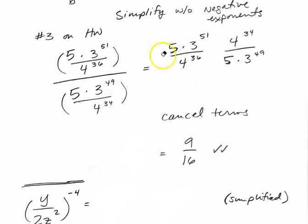So 4 to the 34 over 5, times 3 to the 49. And now we can just play our exponent game. We'll get cancellation with the 5s. We've got 4 to the 36 in the denominator, 4 to the 34 in the numerator.